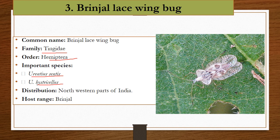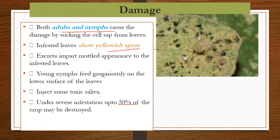Coming to the next important pest — the brinjal lacewing bug. The wings of these bugs look like lace, that is why the common name given is lacewing bug. It belongs to the family Tingidae, order Hemiptera, and contains two important species: Durantius centis and Durantius ericellus. It is distributed in the north-western parts of India, and the host plant is brinjal only — that is, it is a monophagous pest. Damage is caused by both stages, that is nymphs and adults, by sucking the cell sap from the leaves.